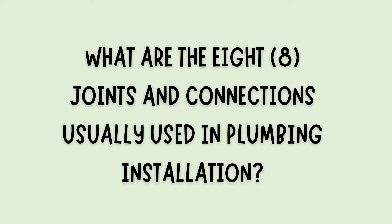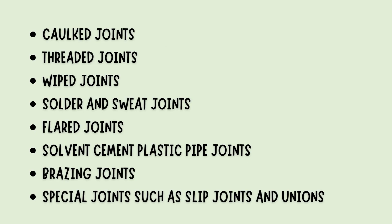That's it for our questions. Before we end our review, can you enumerate the 8 joints and connections usually used in plumbing installation? First are the caulked joints, usually used for bell and spigot cast iron pipes. Second are the threaded joints, used for iron pipe size pipe and fittings — Teflon tapes are acceptable for use on male threads only. Third are the wiped joints, used for lead pipes. Fourth are the solder and sweat joints used for copper tubings, properly fluxed by non-corrosive flux. Fifth are the flared joints used for soft copper water tubing. Sixth are the solvent cement plastic joints, usually used for PVC pipes, also called cold welding press. Seventh are the brazing joints, obtained by joining metal parts with alloys that melt at temperatures higher than 449°C but lower than the melting temperatures of the parts to be joined. Eighth are the special joints, which include slip joints for fixture drains and traps, and unions.